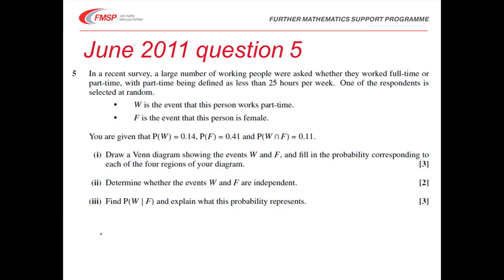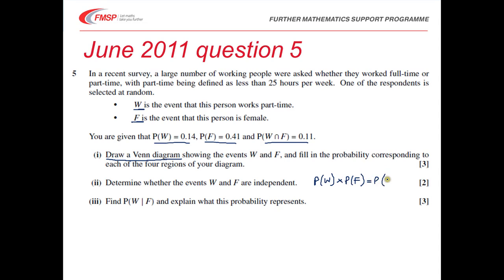Let's have a look at some exam questions. It's always a good idea to read through the question first. We've got people being asked whether they worked full-time or part-time. One of the respondents is selected at random. W is working part-time and F is female. We're given three pieces of information and we're asked to draw a Venn diagram. We then have to determine whether the events W and F are independent — that's basically checking whether P(W) times P(F) equals P(W and F) or not. And then we've got to find P(W given F).